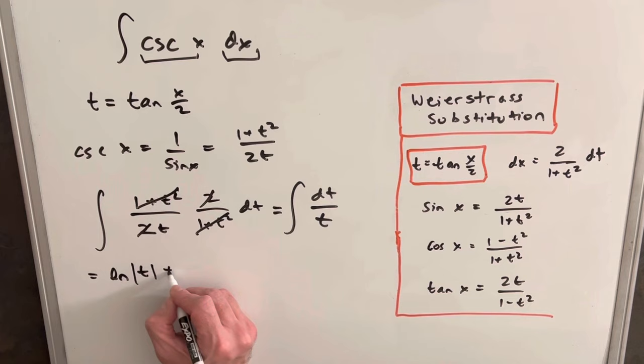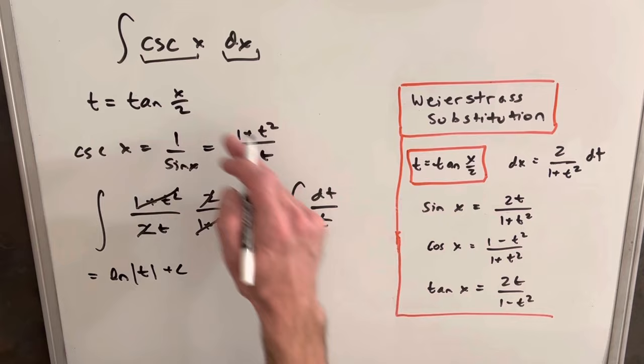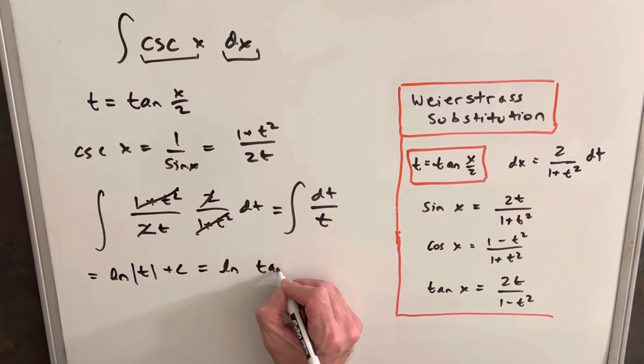Now, we want to back substitute. We know our value of t is our initial substitution, tan x over 2. So really, what we have is ln tan x over 2.